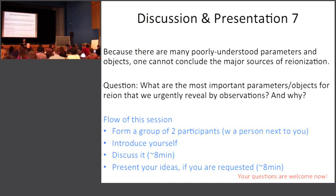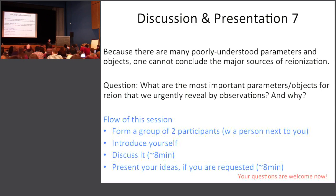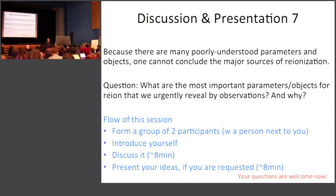Let's move on to the discussion and presentation. The question is again: what are the most important parameters and objects for reionization that we urgently need to reveal by observations? One point raised was how long the period of F_escape actually lasts in any of these objects — for galaxies but also for AGN and exotic sources. You can have a luminosity function but that doesn't necessarily translate into F_escape unless you really average everything.